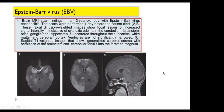Epstein-Barr virus encephalitis — this scan was performed one day before the patient died. Diffusion-weighted images show abnormal hyperintense signals distributed throughout the cerebellum, brain stem, basal ganglia, hippocampi, scattered throughout the subcortical white matter and cerebral cortex. T1 sagittal sections show diffuse brain edema, loss of the cisterns and sulci, and herniation of the brain stem and cerebellar tonsils.